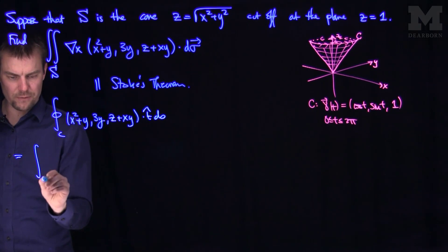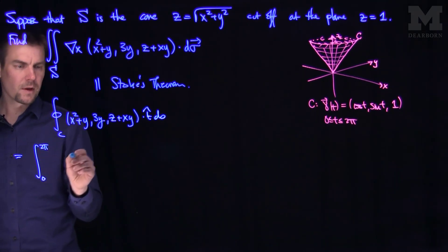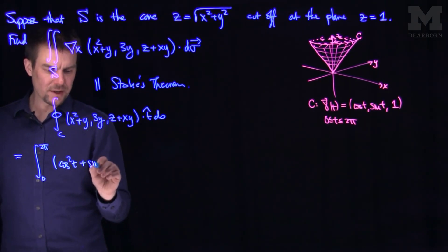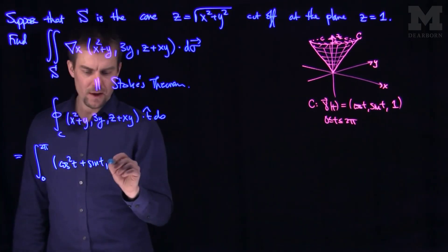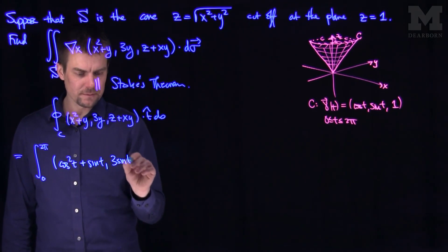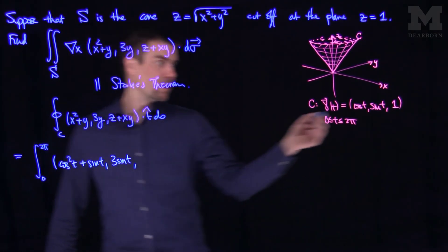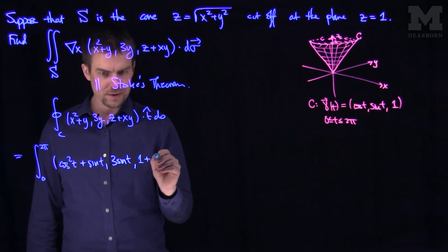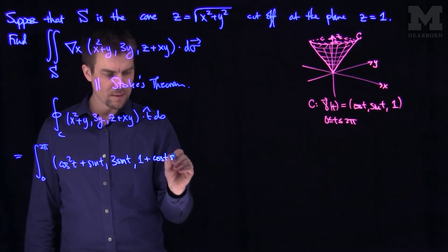So this will be equal to the integral from 0 to 2 pi. x squared will be cosine squared of T plus sine of T. That's my y. Then I'll have 3 sine of T. Then I'll have z, but on this curve z is equal to 1, so I'm going to have 1 plus cosine of T times sine of T.